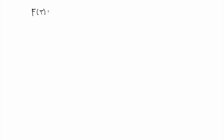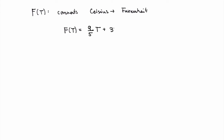Let me define a function capital F of T, which is a function that converts temperatures in Celsius degrees to Fahrenheit degrees. This is something that might be very useful in everyday life. If you're given a temperature in Celsius degrees, to get the temperature in Fahrenheit degrees you need to multiply by 9 over 5 and add 32.